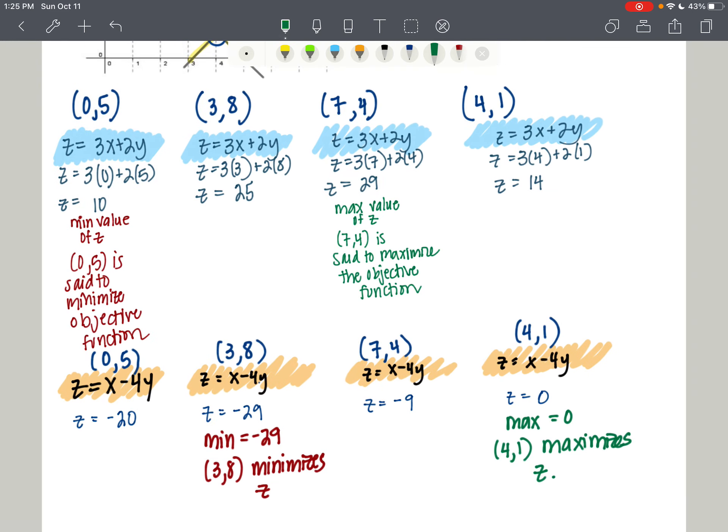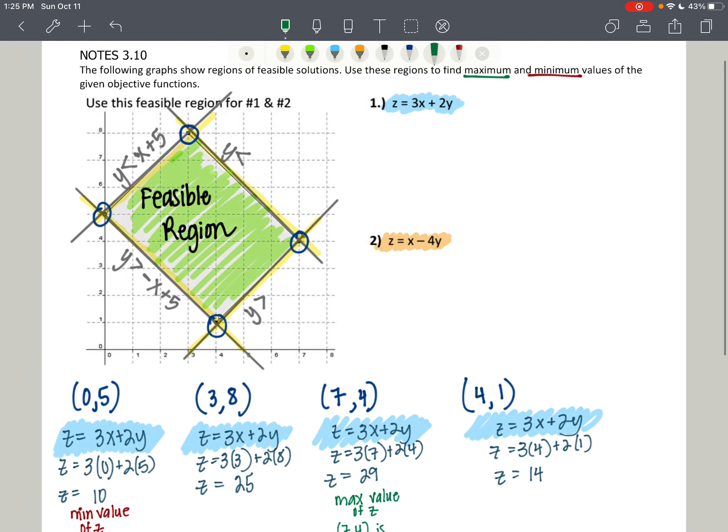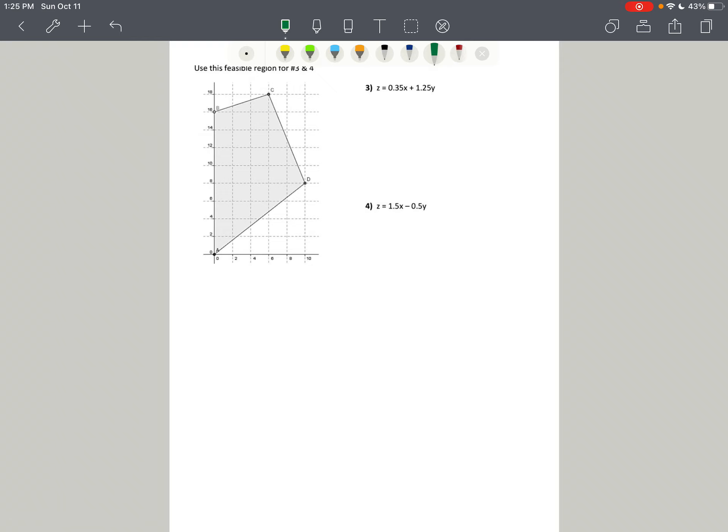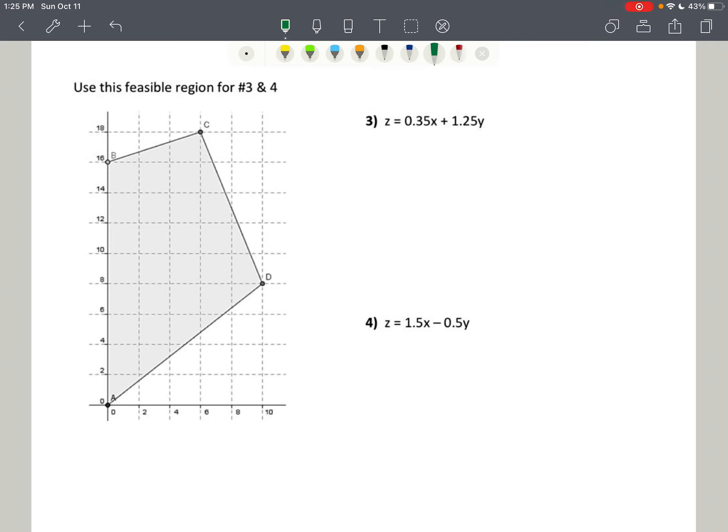Now what happens when we don't have the picture already given to us? Well, we're going to do that in another problem. But let's try and use this feasible region. Let's see if you can do number 3 and 4 on your own. And I'm going to provide the answers. They are decimals, but I believe that you can persevere through these decimals and make it work.